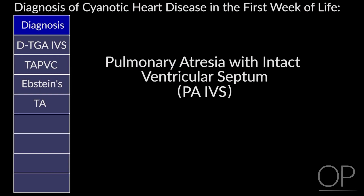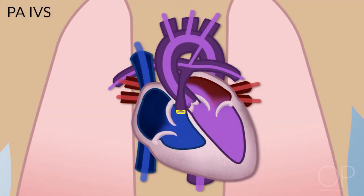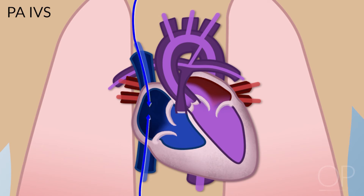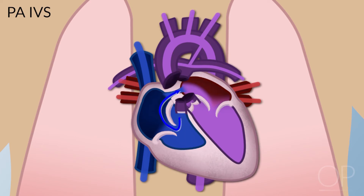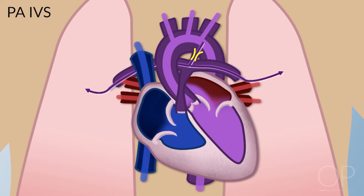Pulmonary atresia with intact ventricular septum: these kids have no outlet from the right ventricle, and usually the right ventricle doesn't grow very much. Blood comes back from the body to the right atrium, can't get out through the pulmonary valve, so it goes across to the left side and out the aorta. These kids are dependent on their ductus arteriosus for pulmonary blood flow, and when the ductus arteriosus closes, they get into difficulty.